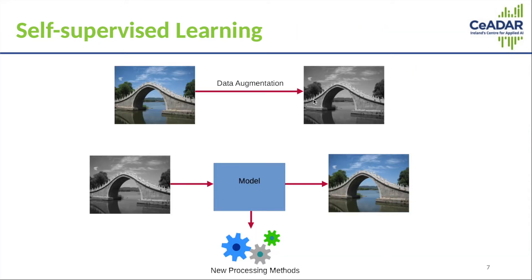The other topic of this Lighthouse project is self-supervised learning. This is another method which allows us to take advantage of unlabeled data. What this consists of is taking some unlabeled data — in this example I've chosen images — and augmenting it in some way, and then training a model to fix this augmentation. The idea is that when training this model, new processing methods will be automatically learned for this data, which take advantage of trends and patterns within it.